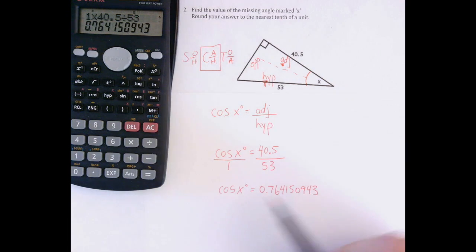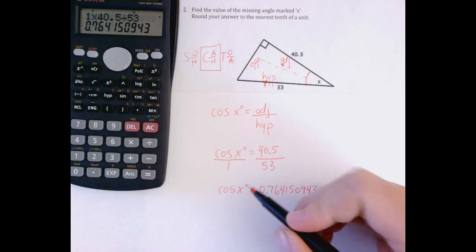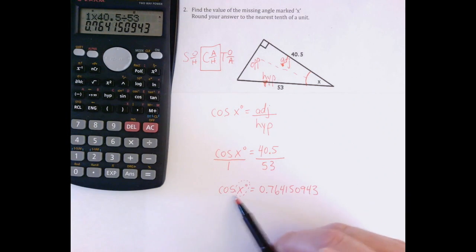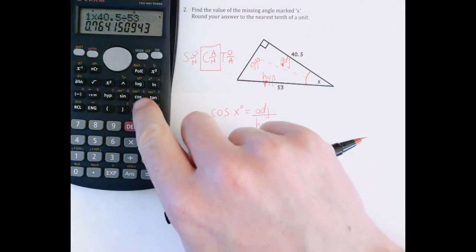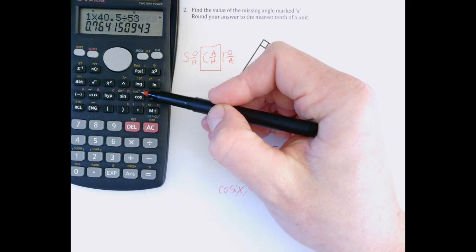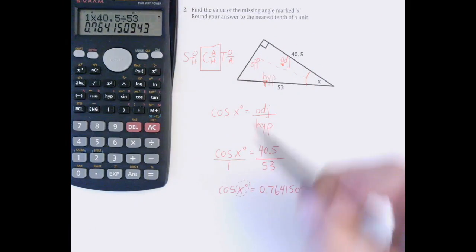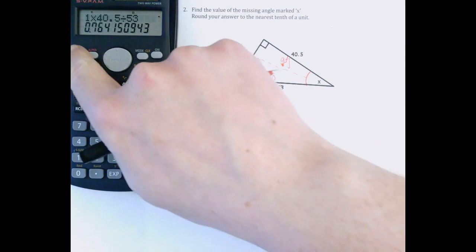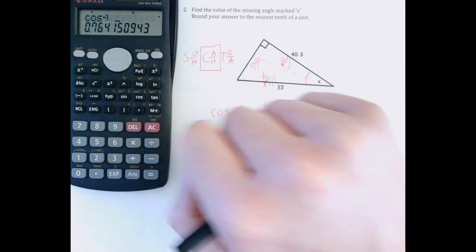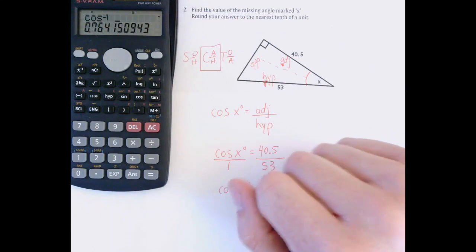Now remember, that's the cosine of x degrees. I don't want cos of x, I just want x degrees. To get rid of this cos out front, look right above the cos button, there's a cos^-1 in the corner, and that's what I need. On this calculator, it's shift, that button up there, and then cos, and you'll see cos^-1 shows up on the screen.